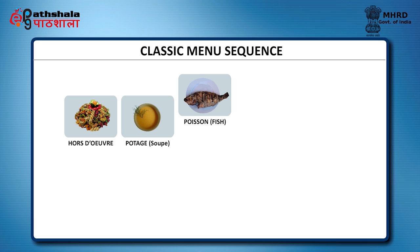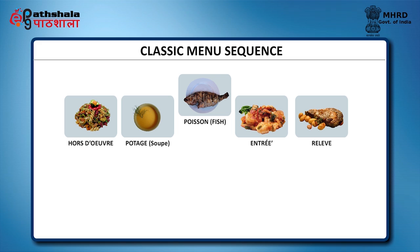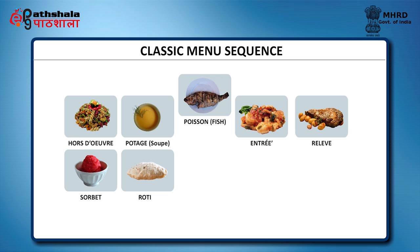The fourth course is entrée — the word literally means 'entrance' — and can include cereals, different preparations of eggs, sausages and pasta. The fifth course is relevé, the main course in English, which can be big joints of lamb, chicken or veal served with accompaniments of vegetables and potatoes. The sixth course is sorbet, considered a rest course, mainly ice water flavoured and sweetened with fruits and fruit juices. The seventh course is rôti — game birds like chicken, pigeon and duck are served. The eighth course is légumes, where different kinds of vegetables like carrots, lettuce, mushrooms and artichokes are served.